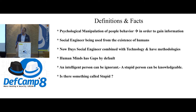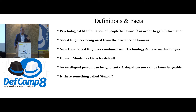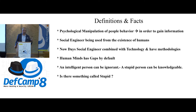Now the term social engineering is combined with technology and has many techniques. The human mind can be fooled by default — including social engineers themselves. It's just harder to target someone working in security. It's not about stupidity; it's about lack of awareness of what phishing is, which makes it easy to target you.